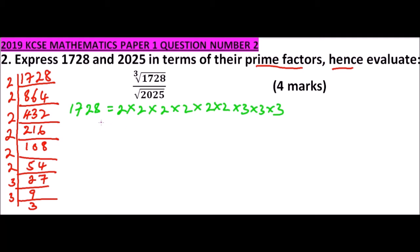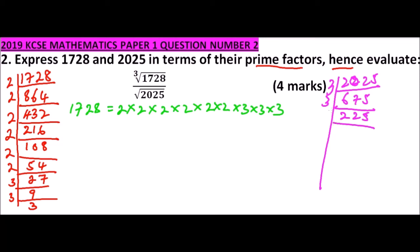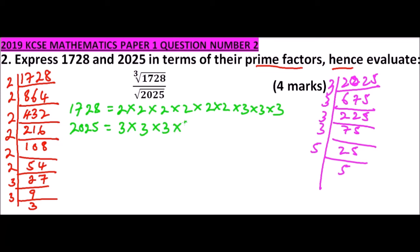Now we get the prime factors of 2025. Dividing by 3: 2025 ÷ 3 = 675, ÷ 3 = 225, ÷ 3 = 75, ÷ 3 = 25, ÷ 5 = 5, ÷ 5 = 1. So the prime factors of 2025 are 3 × 3 × 3 × 3 × 5 × 5.